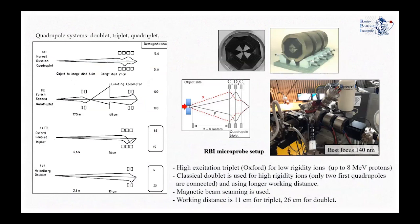Among the different quadrupole systems that have been studied, you can see here four of the most well-studied systems. In Roger Boscovich, we work with two setups. We use a high energy excitation triplet configuration, which can give us magnifications in X and Y up to 66. Depending on the rigidity of the ions, we also use a classical doublet configuration for high rigidity ions, by disconnecting the first quadrupole. This is achieved by having different working distances for each configuration: 11 centimeters for a triplet configuration and 26 centimeters for a doublet configuration.